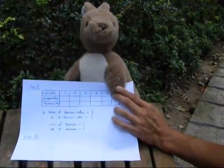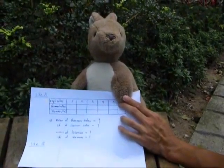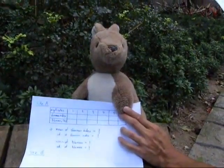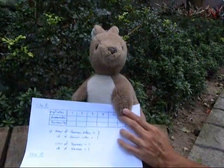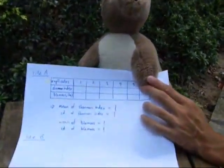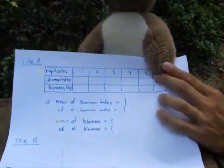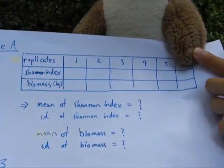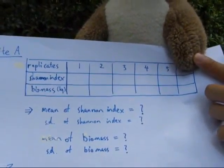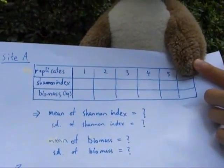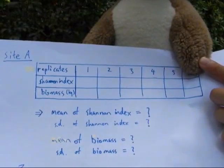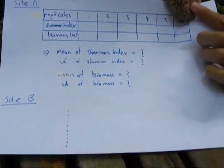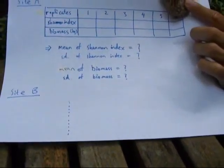We place the quadrats using a random number table, doing the same procedure as before. Then we calculate the Shannon Index and biomass in each replicate. After that, we calculate the mean and standard deviation of the Shannon Index and biomass in each site, and repeat the same procedure for all sites.